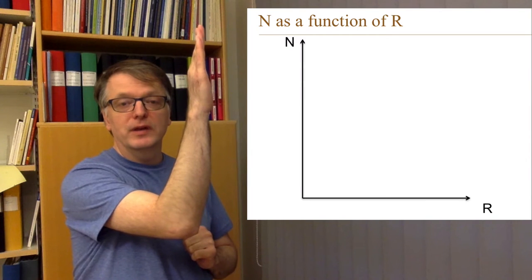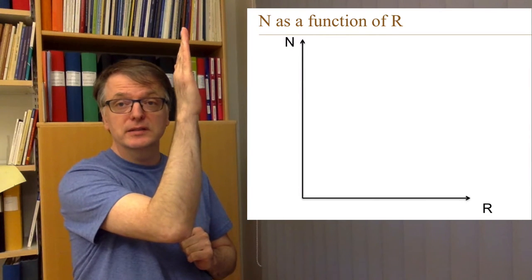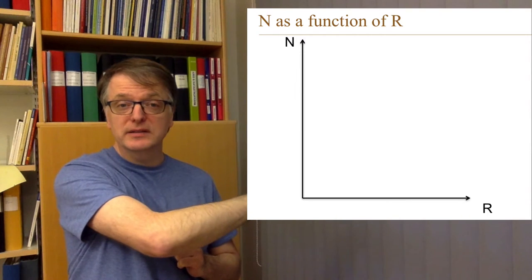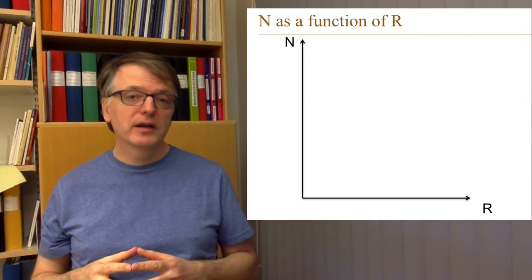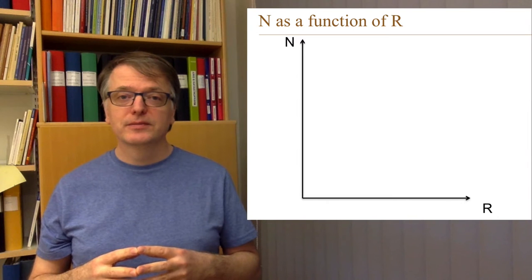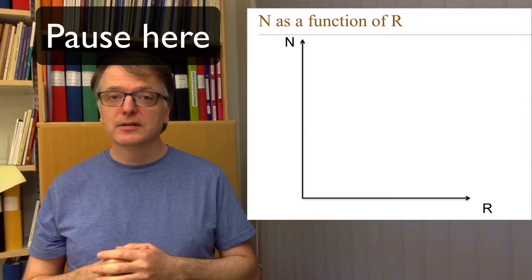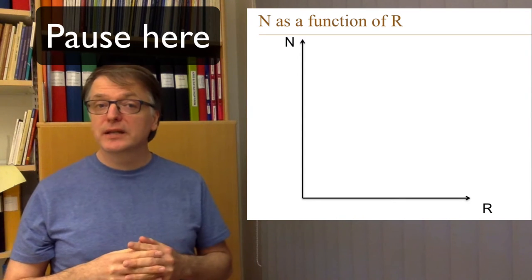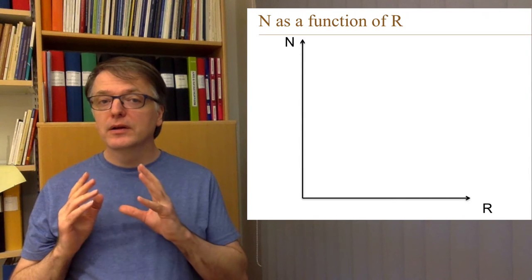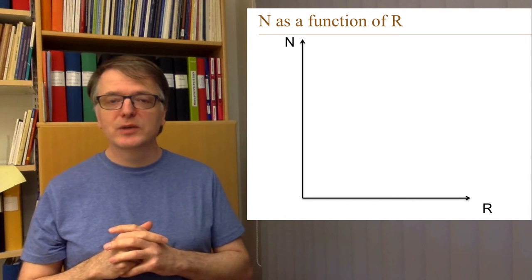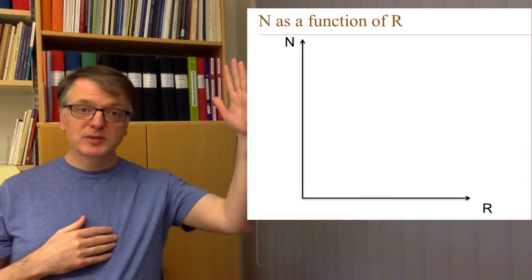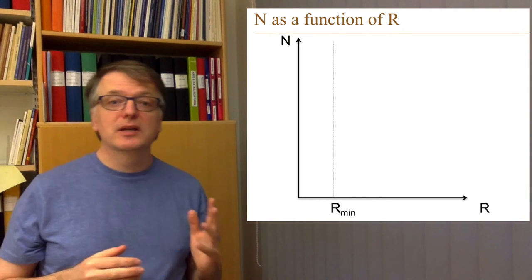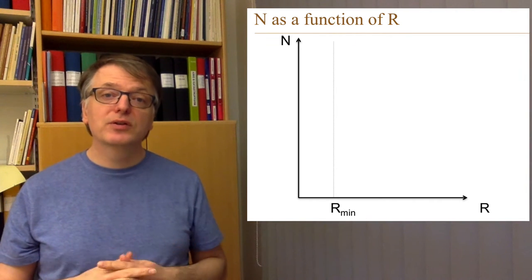In a diagram with the number of equilibrium stages needed on the y-axis and the reflux ratio on the x-axis, draw the number of equilibrium stages required as a function of the reflux ratio. Pause here and try to do that. There are two important lines to draw first: one is the minimum reflux ratio, which is a vertical line in the diagram — we cannot have a smaller reflux ratio than that.